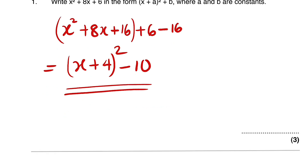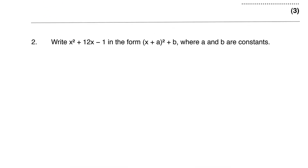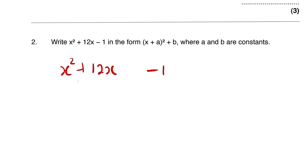Let us move on to the second question. The second question is almost the same. We are given x squared plus 12x minus 1, and we are asked to write it in this form. We write x squared plus 12x, leave a space, then minus 1. We take half of 12 and square that — 12 divided by 2 is 6, and 6 squared is 36.